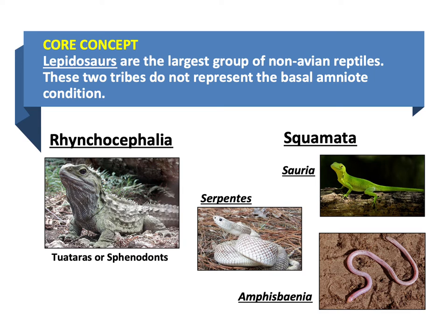Squamates include not only snakes or serpents, but lizards — the Sauria — as well as the quite interesting group called the amphisbaenids. Those three together make up the squamates, which are distinguished from the rhynchocephalids. None of these groups represent what amniotes looked like a long time ago — we don't know what they looked like, just as we don't have the ancestor of turtles either.